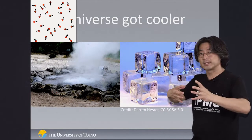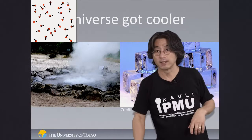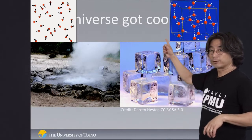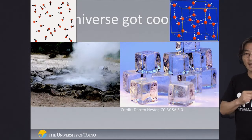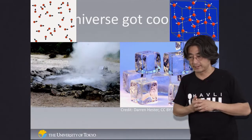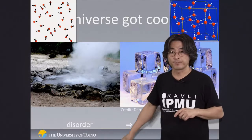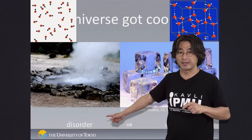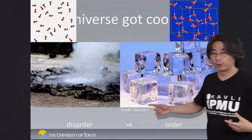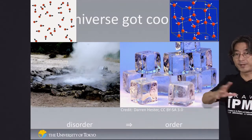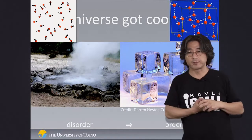When you cool steam down to a colder temperature, eventually water freezes and becomes ice. Ice is a crystal — the water molecules are lined up in a very special way, neatly packed with each other. The initial stage of the universe was in a disordered state; everything was random. But as the universe cooled, an order was formed — everything lined up neatly. This is what we believe happened to the Higgs boson.